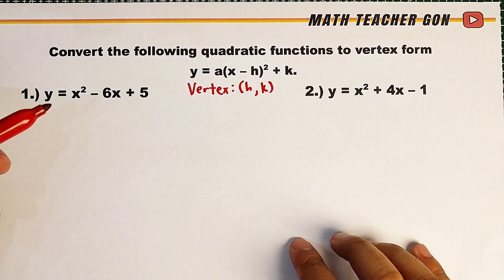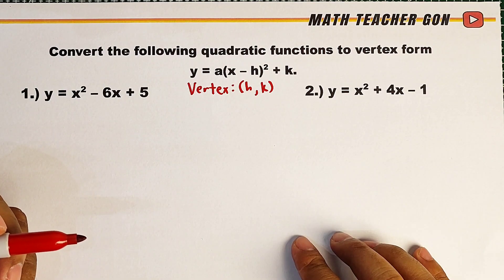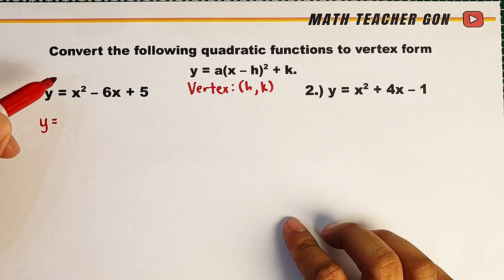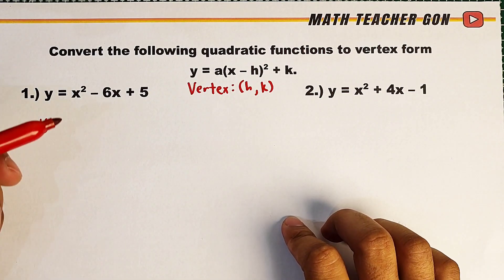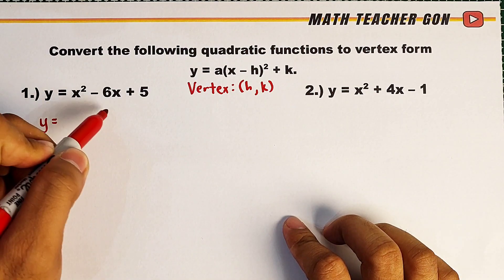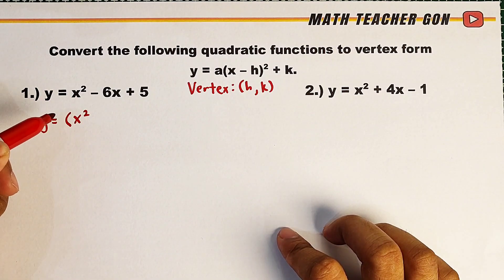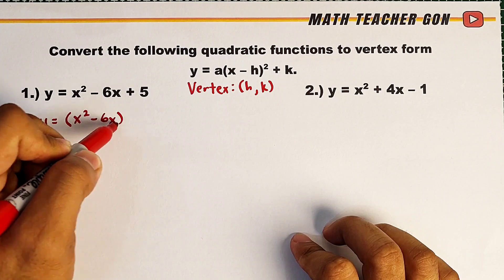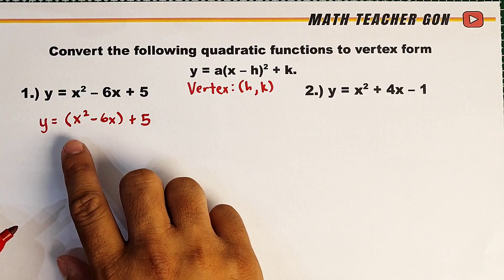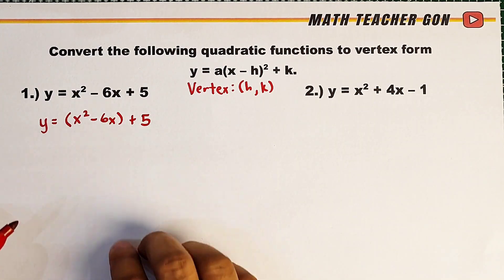Let's start with number one. We have y is equal to x squared minus 6x plus 5, and how do we convert this into vertex form? First step is that we copy y and then regroup the terms of this function. The first two terms, x squared minus 6x, must be placed inside parentheses like this: quantity x squared minus 6x, plus 5. Now we will complete the square of these two terms and make it a perfect square trinomial.